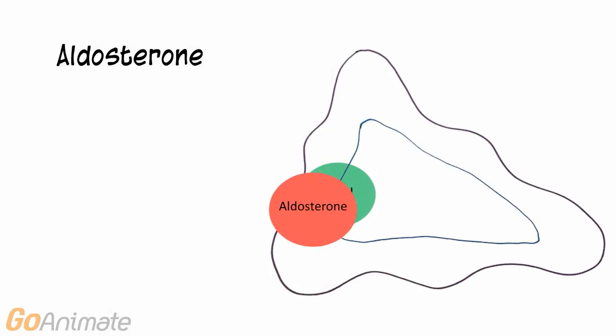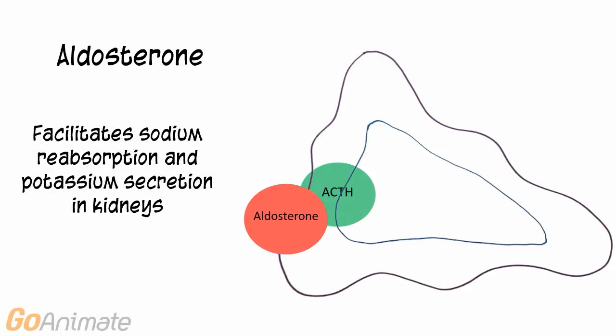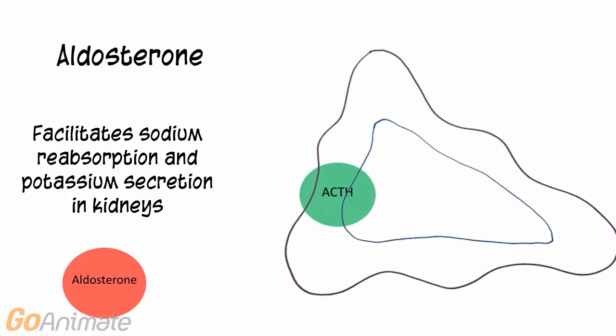Another hormone affected by ACTH is aldosterone. Aldosterone targets the kidneys to cause an increase in sodium reabsorption and potassium secretion.